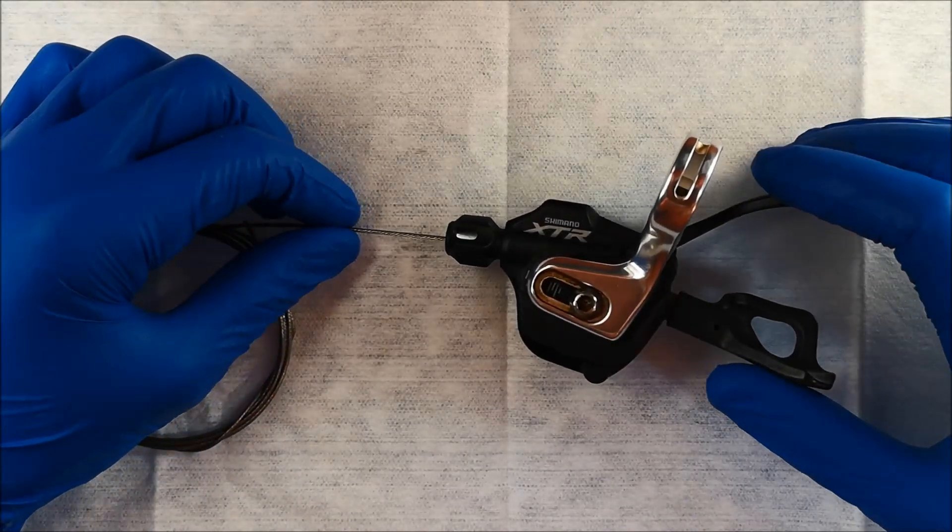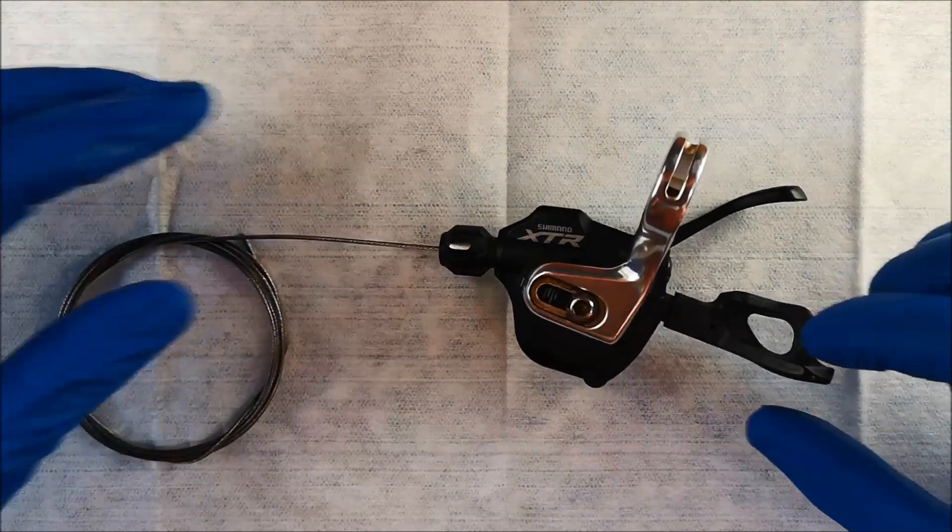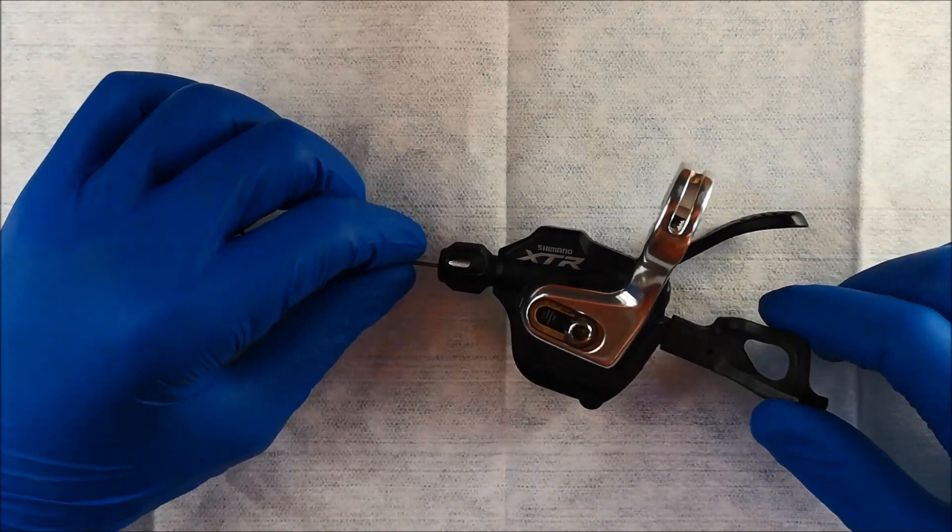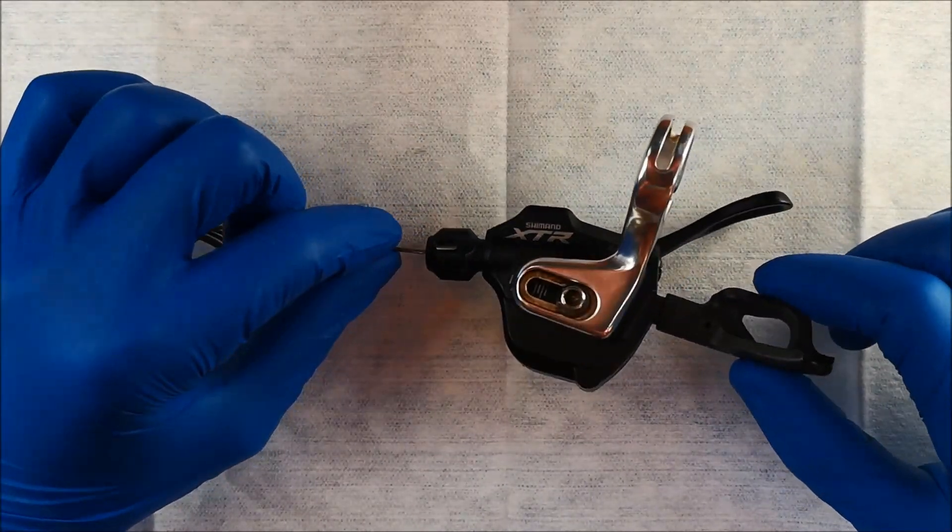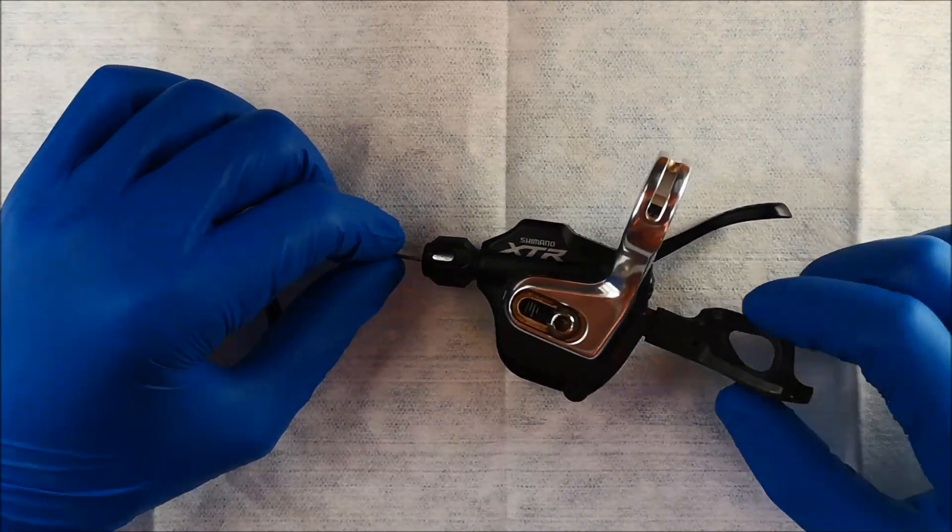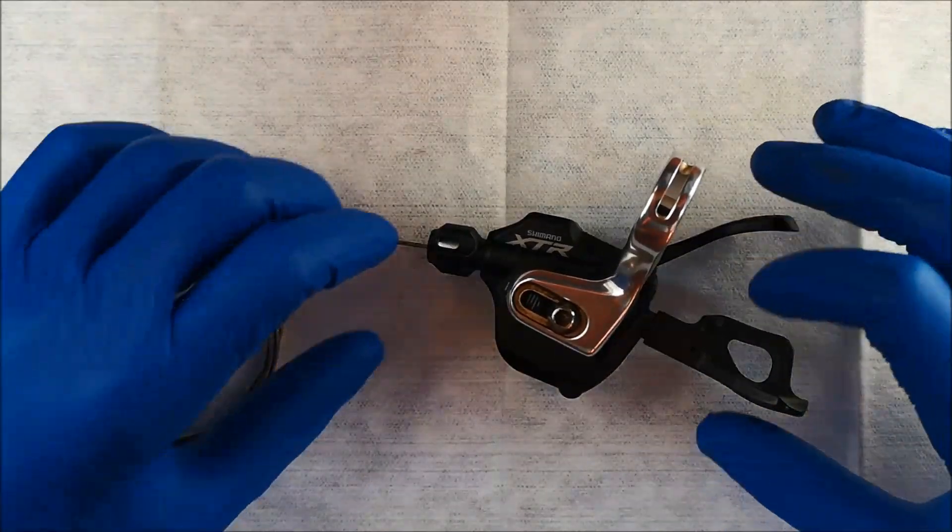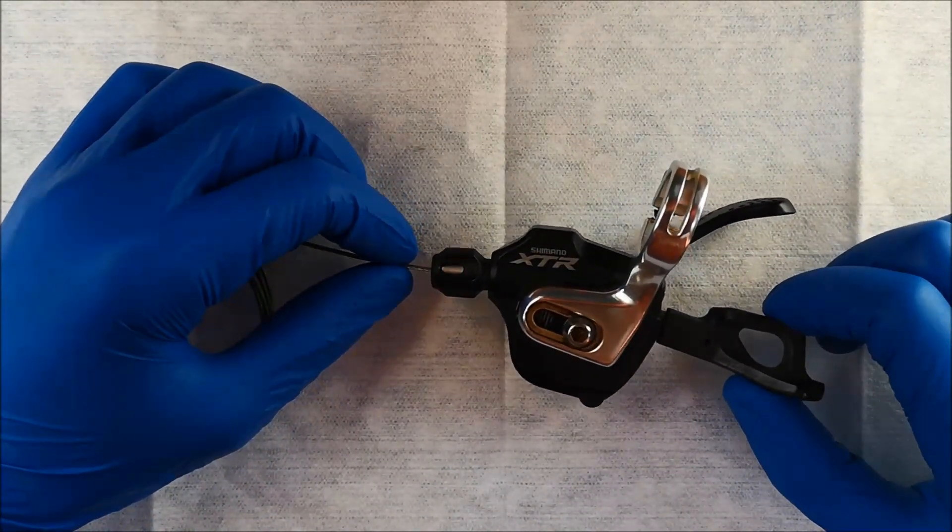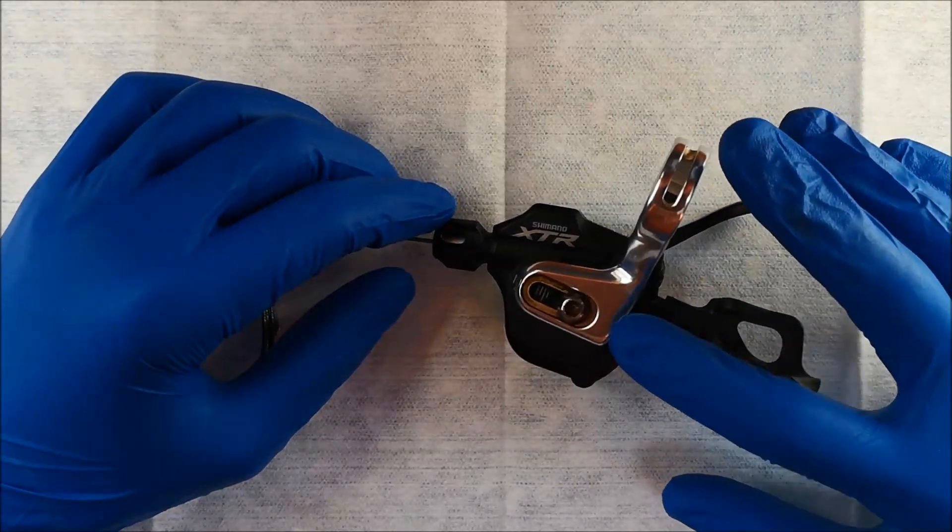Welcome back. So today, continuing on from my last video, we're going to use this XDR shifter to turn it into a dropper lever. Now to start, we are going to separate the shifter into its parts so we can get to the mechanism inside.